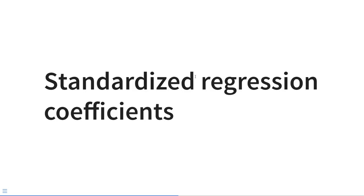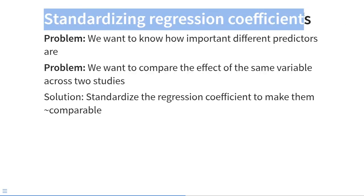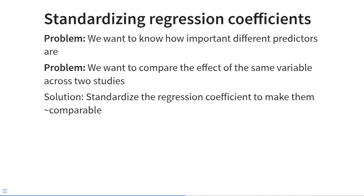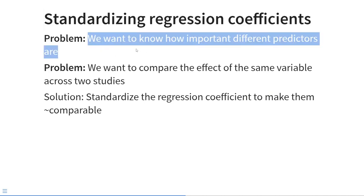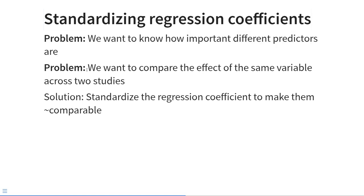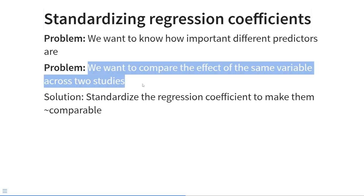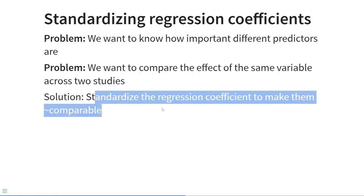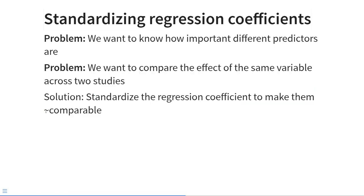Let's look at standardized regression coefficients in the context of multiple linear regression. We use them to solve one of two problems: first, we want to know the relative importance of different predictors; second, we want to compare the effect of the same variable across two studies where it was measured on a different scale. For both of these problems, the solution is to standardize the regression coefficient to make them approximately comparable.